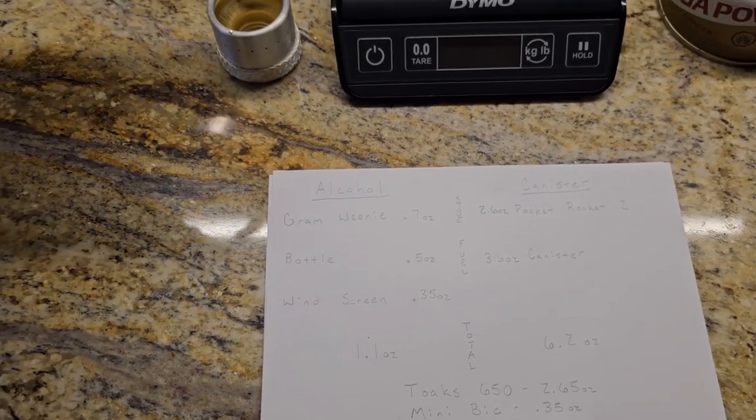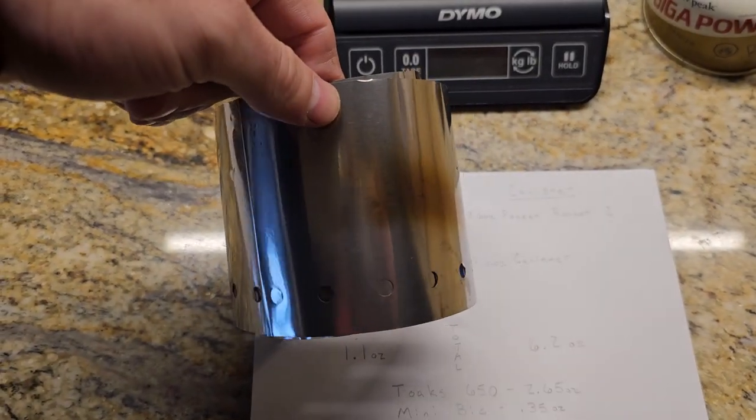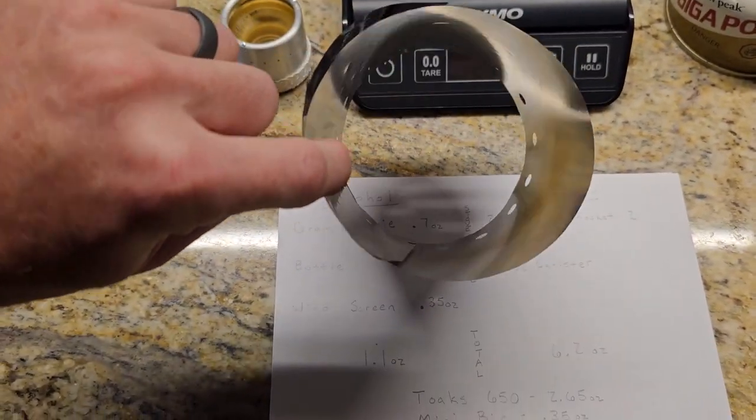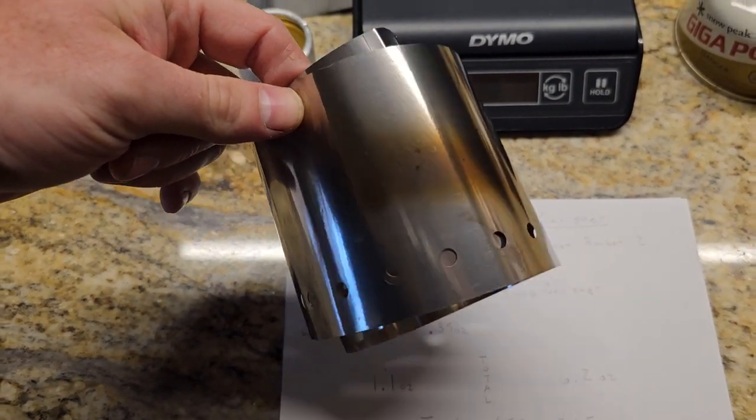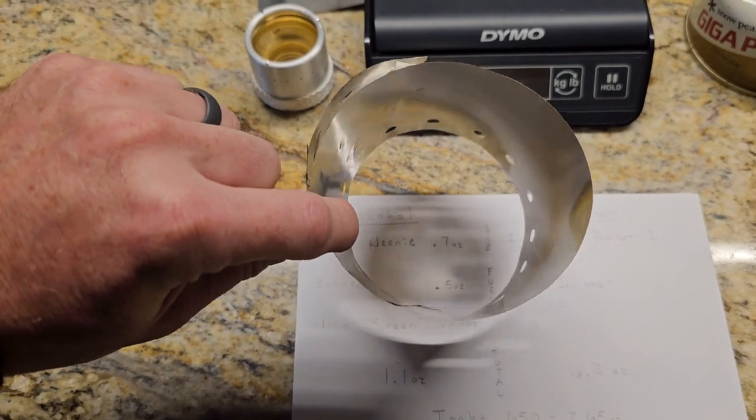Now one thing with the alcohol stove is you almost certainly have to use a windscreen. This is a titanium windscreen. I got this from REI, you can get these on Amazon. This is super lightweight.